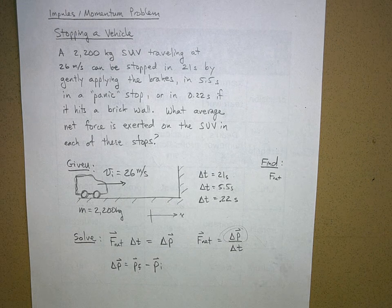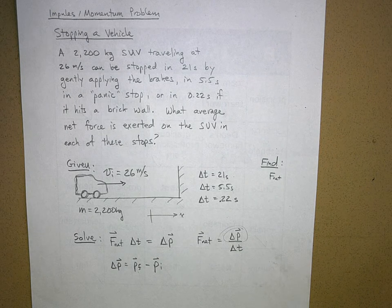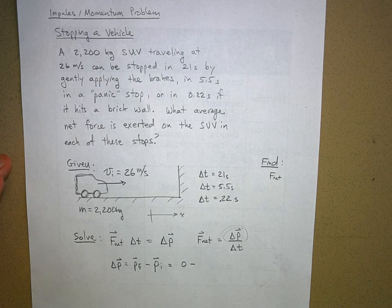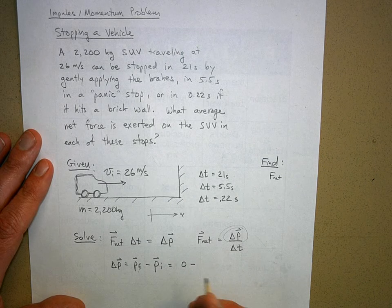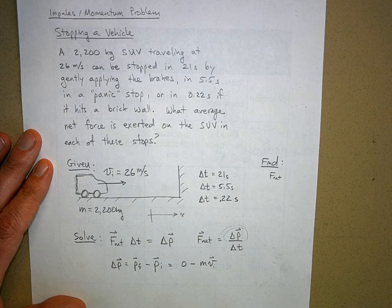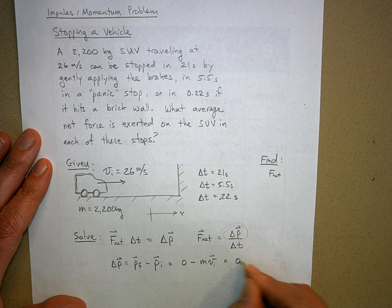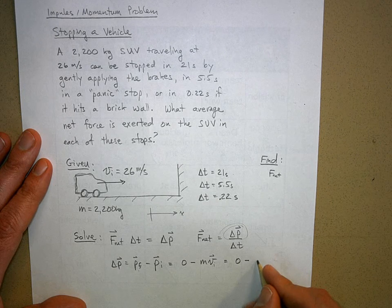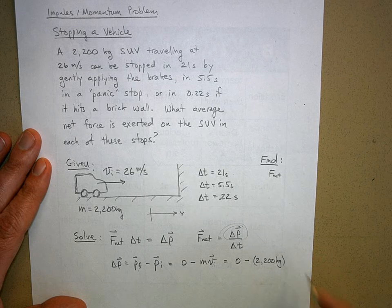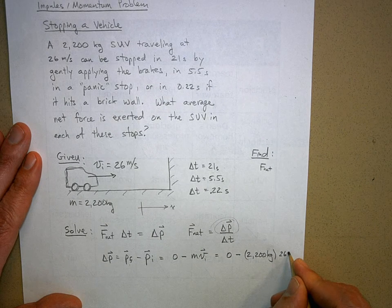What is the final momentum of my SUV in all three of these cases? Zero, it's not moving. Minus what is my initial momentum? Well, the initial momentum is the mass of my SUV times its initial velocity. So this is going to be zero minus the mass, 2,200 kilograms, times its velocity, 26 meters per second.